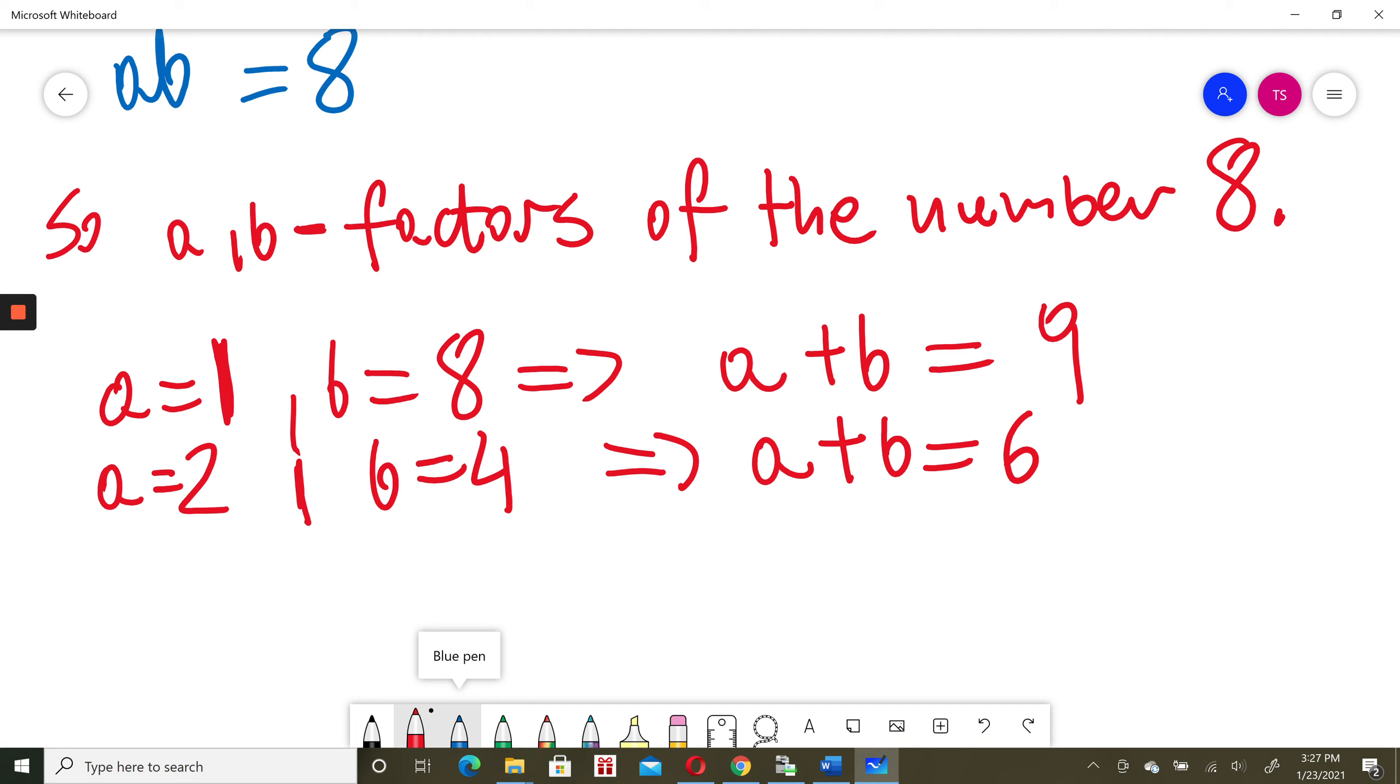What else could happen? a could be equal to 4. a times b must be 8, so when a is 4, b must be equal to 2. Then a plus b, 4 plus 2, will be equal to 6 again.